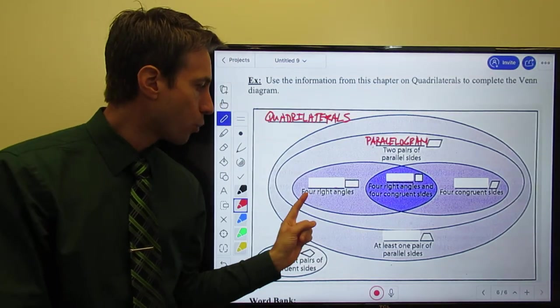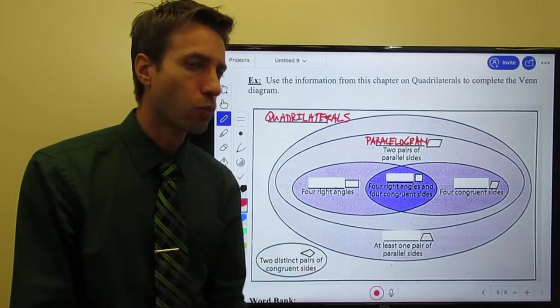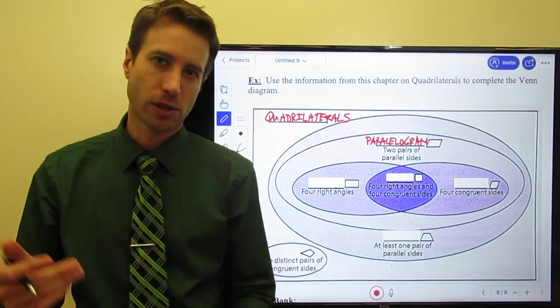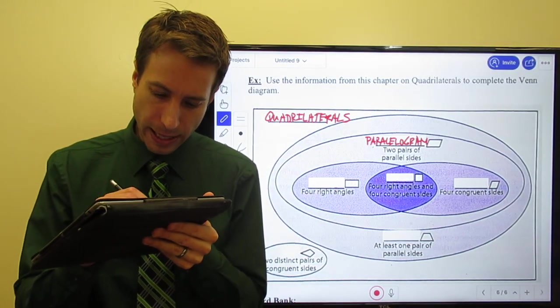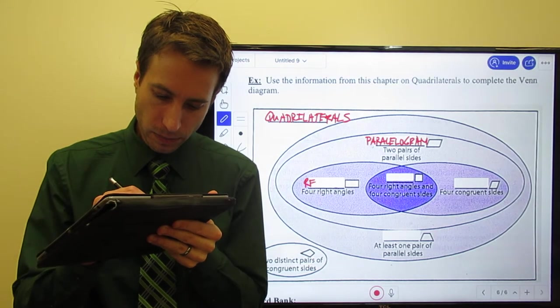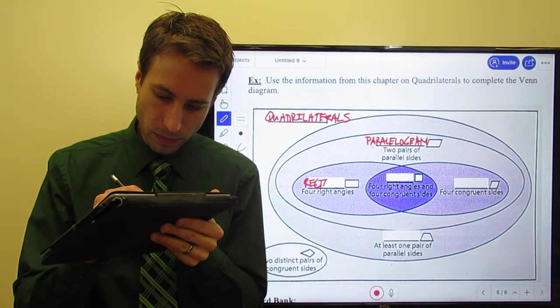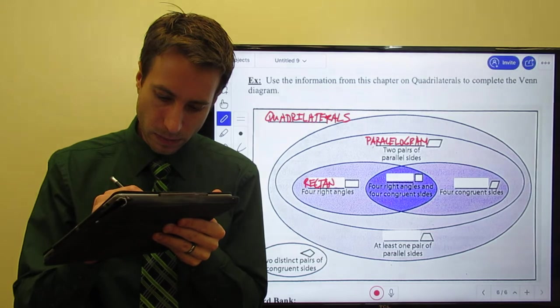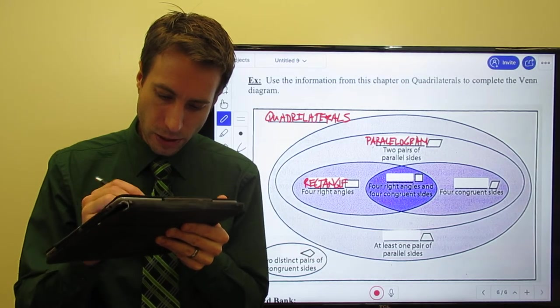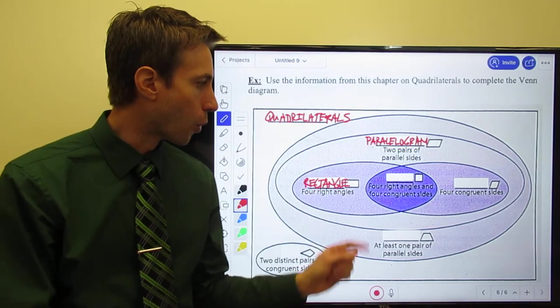Well, there was one where all four angles were right angles. Of course, that was a rectangle. So we had a rectangle which has four right angles.